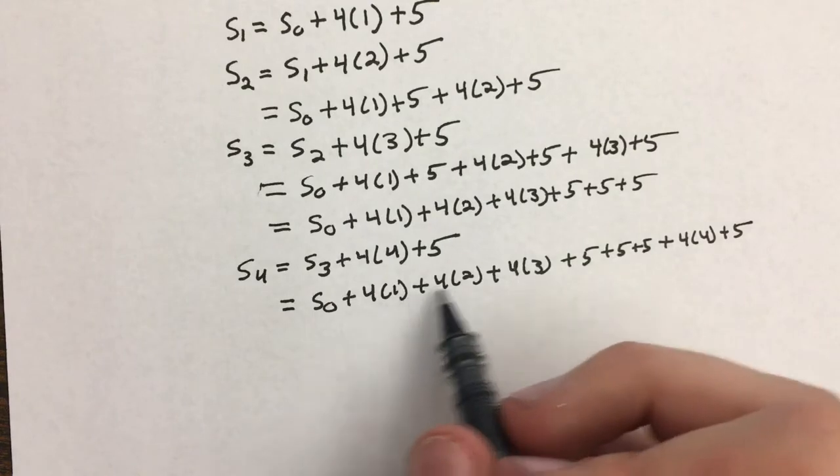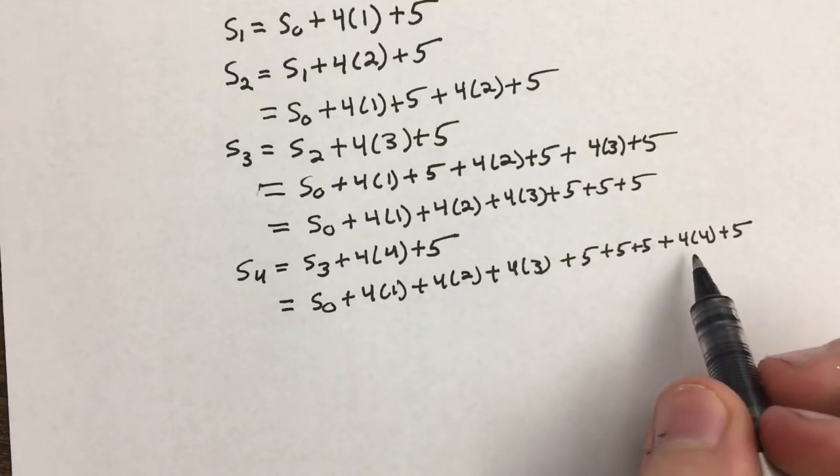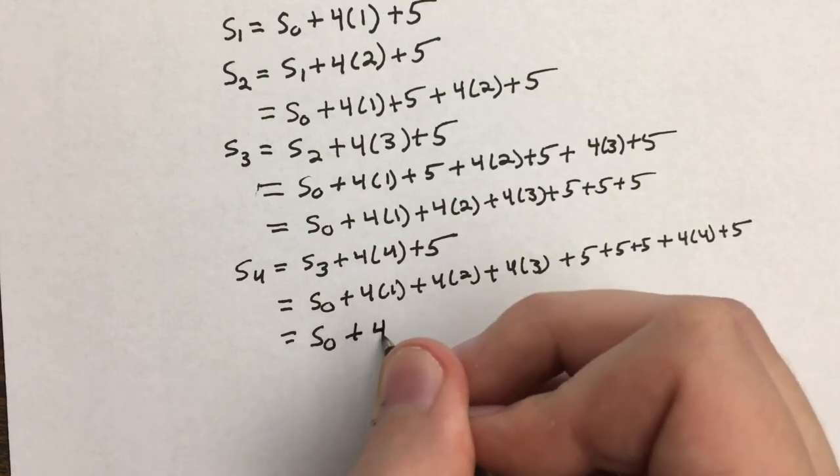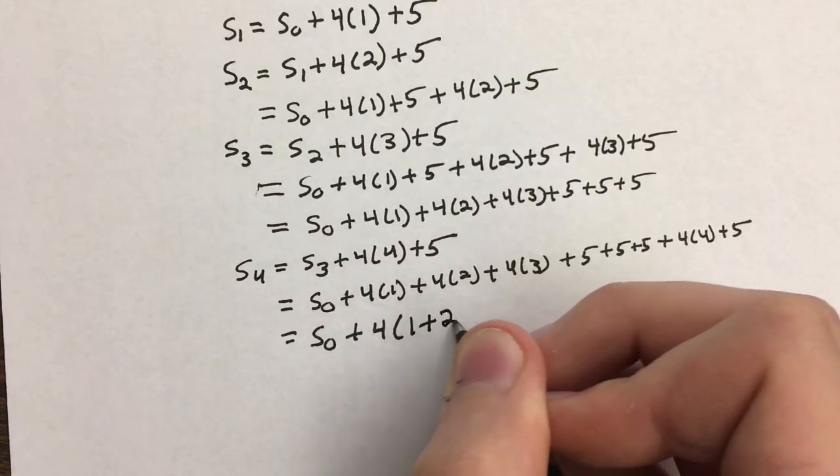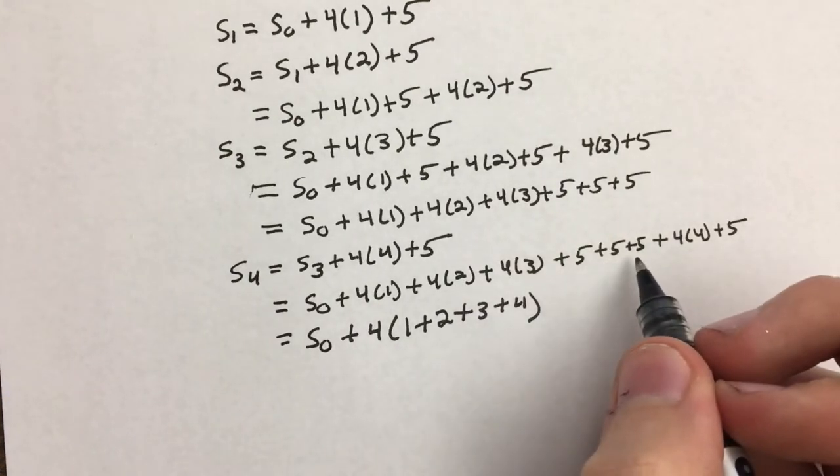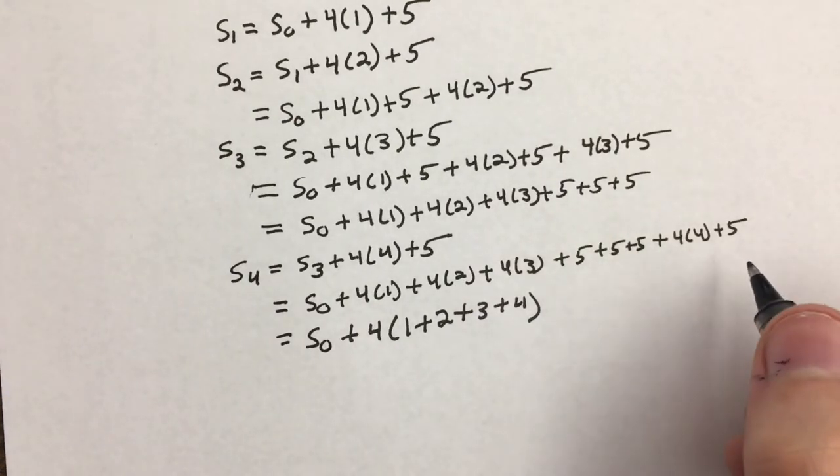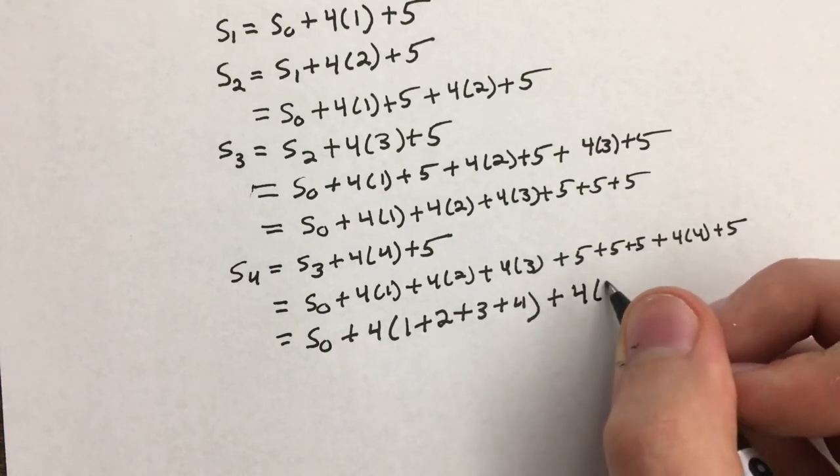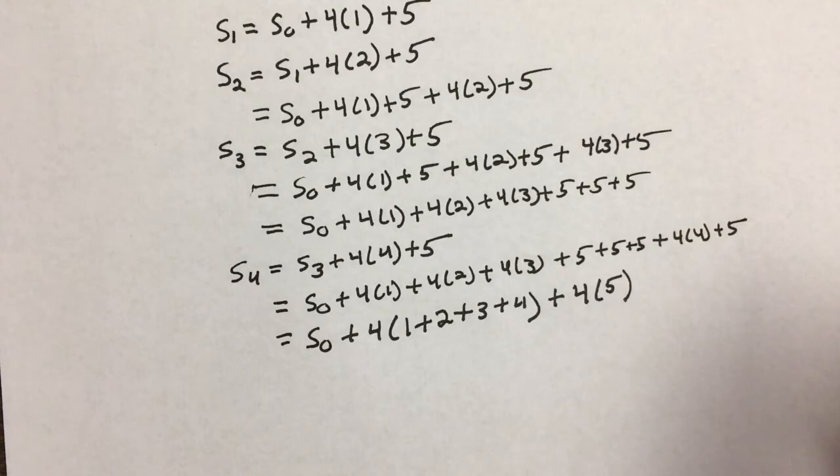Okay, now I'm going to take all these terms that have this 4 in them and I'm going to factor that out. So I'm going to write this as S sub 0 plus 4 times (1 plus 2 plus 3 plus 4). And I'm going to take these four 5's, a 5 added together 4 times is just 4 times 5.